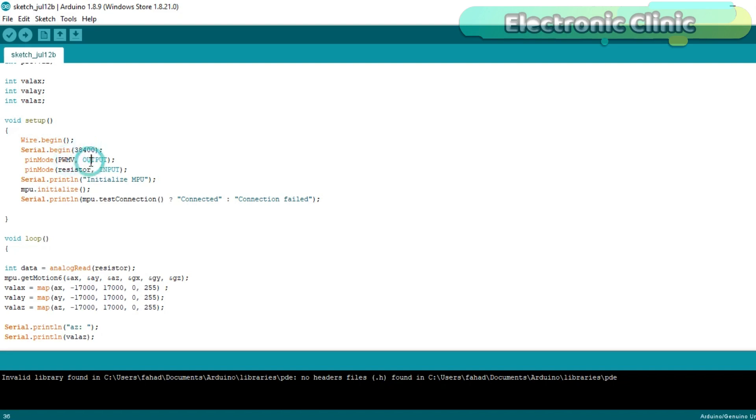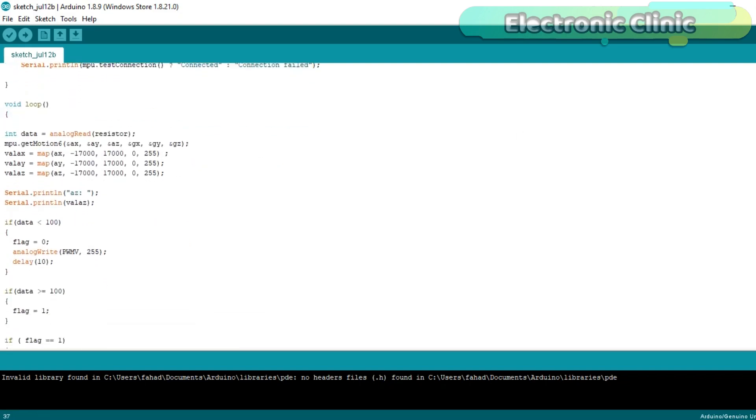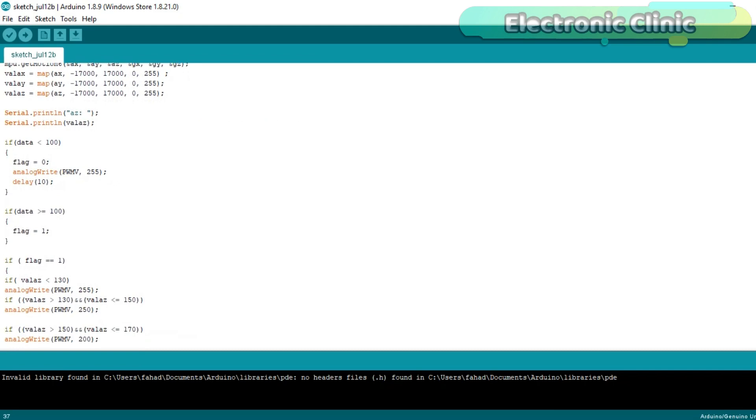PWMV is set as the output, while the resistor is set as the input. In the void loop function, we simply read the variable resistor and store the value in variable data. Then using these if conditions, we check whether the value of the variable resistor is less than 100 or greater than 100. If the value is less than 100, then flag is equal to 0 and stop the electric bike motor.